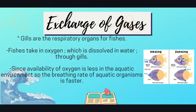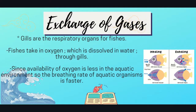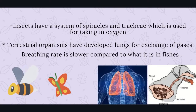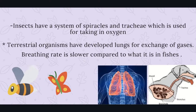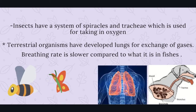For aquatic animals like fish, gills are the respiratory organs. Fish take in oxygen dissolved in water through gills. Since oxygen availability is less in the aquatic environment, the breathing rate of aquatic animals is faster. Insects have a system of spiracles and trachea for intake of oxygen. Terrestrial organisms such as humans, horses, and dogs have developed lungs for exchange of gases, and since oxygen concentration is abundant in the environment, their breathing rate is slower than that of fish.